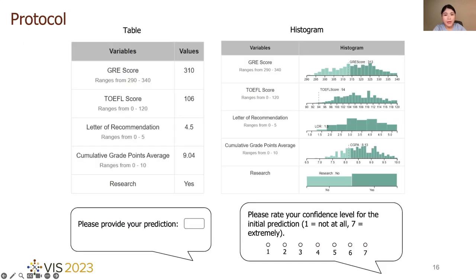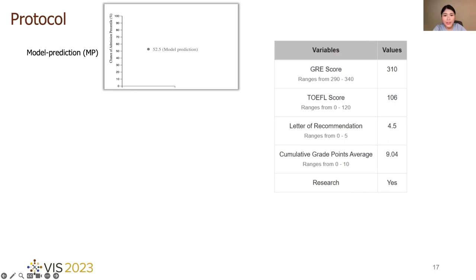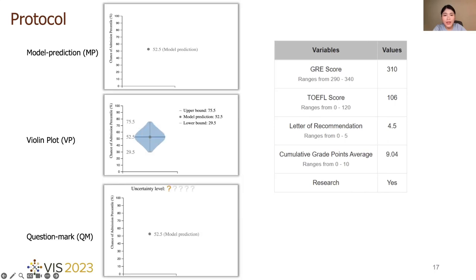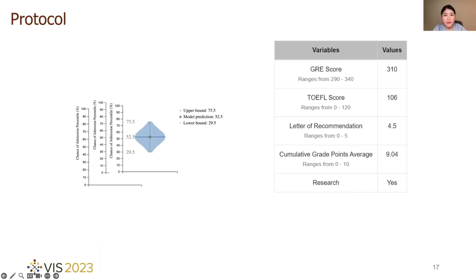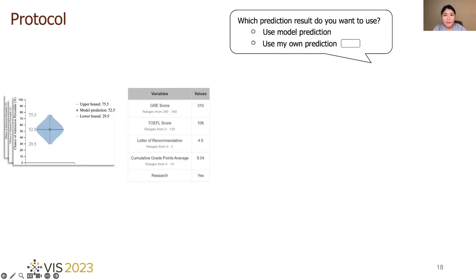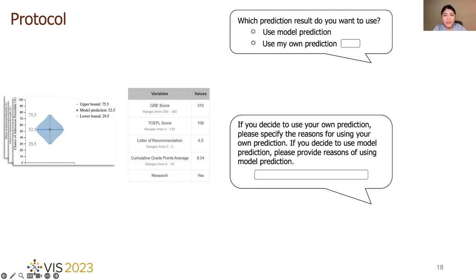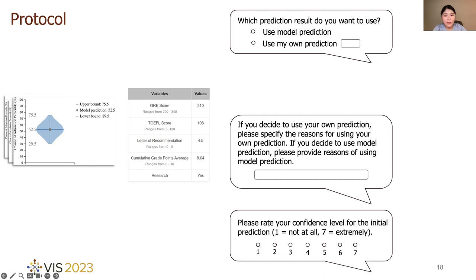Under table and histogram conditions, participants observed the raw data for each applicant and made prediction on their own. They were asked to rate their confidence for their own prediction. Under model prediction only conditions and uncertainty conditions, participants saw one of the three visualizations and also the raw data table. After inspecting visualizations and raw data, they need to choose to adopt model or not, provide corresponding reasons, and rate their confidence for their decision.